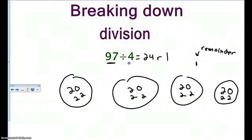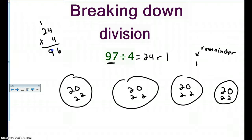My remainder has to be smaller than my divisor. As long as my remainder is smaller than my divisor, my problem is done. Now if you want to know how to check division, you use the opposite — which is multiplication. So twenty-four times four: four times four is sixteen, carry the one, four times two is eight plus one is nine. Then I take my remainder and add it, giving me ninety-seven. So I know I'm correct.